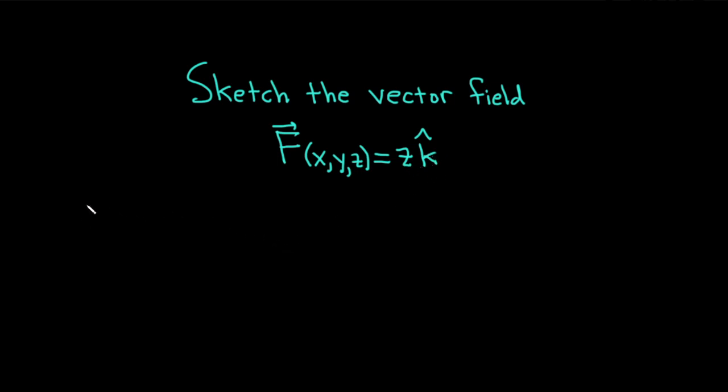Let's go ahead and carefully work through this solution. Let's start by rewriting our vector field. This is really z, and then it's times the vector k hat, which is one of the unit vectors. Its first component is zero, its second component is zero, and its third component is one. This is one of the special unit vectors.